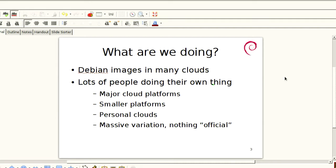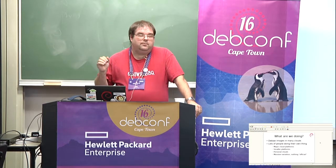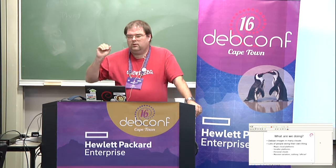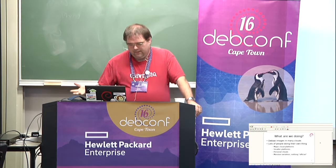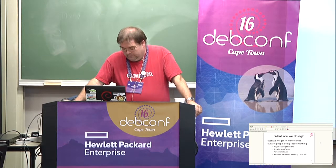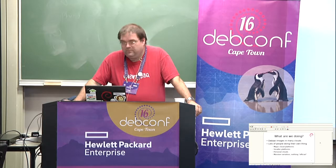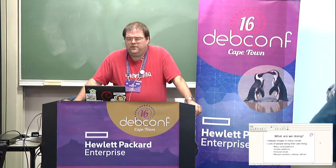So, what are we doing? We have Debian images in many clouds. All of the biggest clouds are running thousands and thousands of Debian images every day, I'm told. We have lots of people doing their own thing. The major cloud platforms all have their own Debian images, and smaller platforms do the same. The one thing that worries me is we have a massive amount of variation — every image is different. We're not providing anything official from Debian, well, actually we do have one official one at the moment.